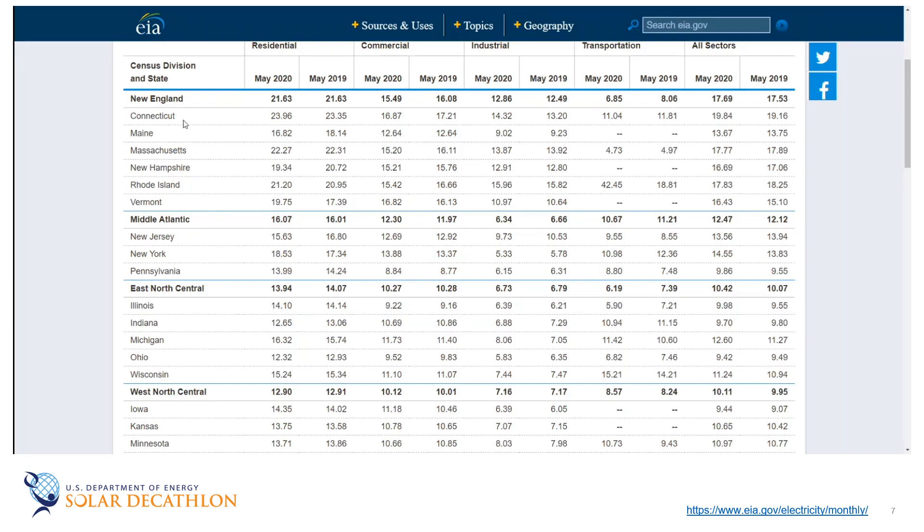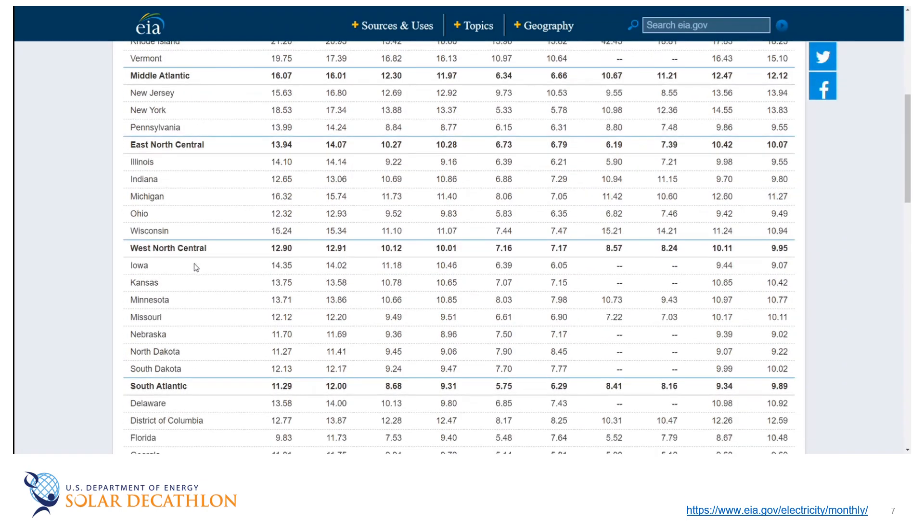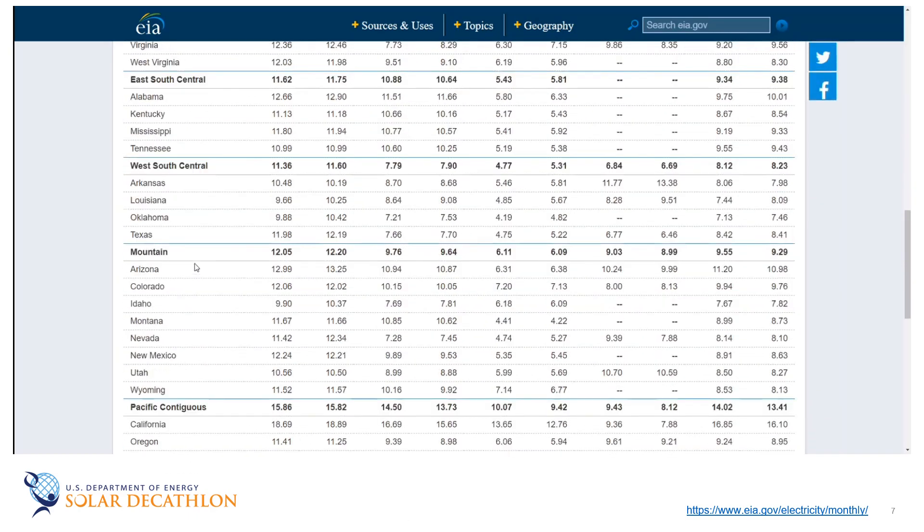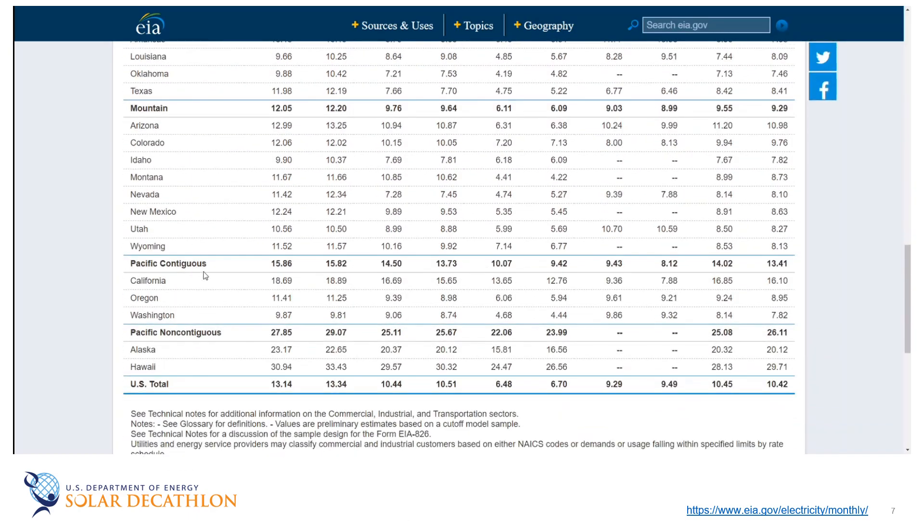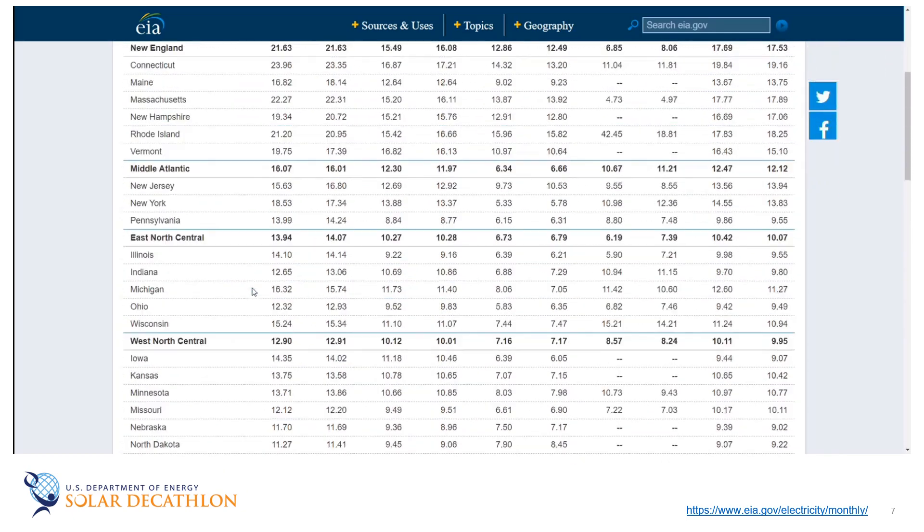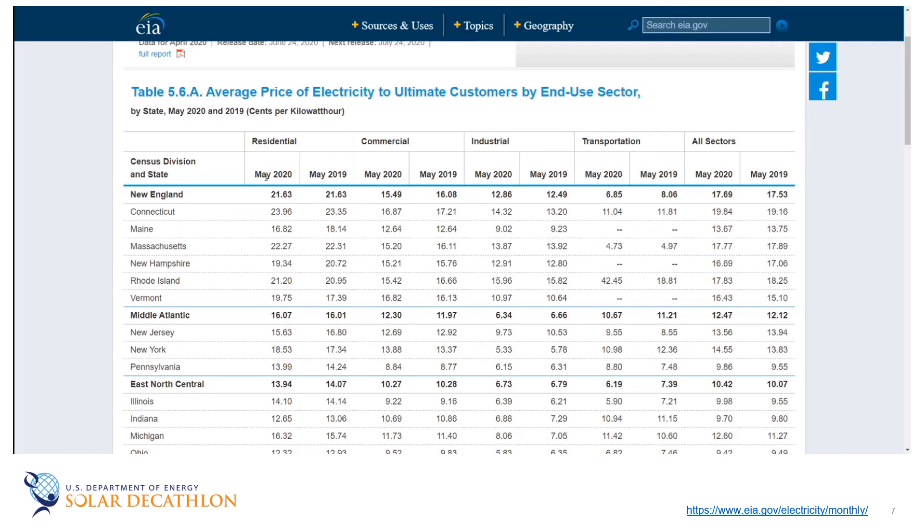And so you start in New England. As you scroll down, you get into the middle Atlantic, and then into the central part of the US, the South Atlantic, and then the mountain and Pacific regions. Now notice that these prices, let's just work on the residential. They do give you the statistics. When we pulled this, this was May of 2020. This does get updated every month. And they also go back a whole year in this case, so you can see how prices are changing.